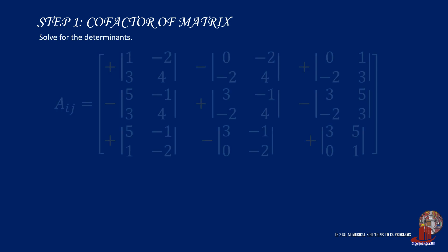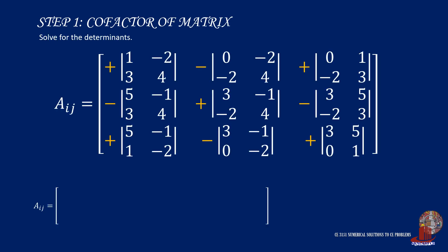Knowing all minors for the cofactor matrix, the next step is to compute for the determinants. From element A11, we have 1 times 4, which is 4, minus 3 times negative 2, as negative 6. Going down, we have 5 times 4, as 20, minus 3 times negative 1, as negative 3. Then further below, we have 5 by negative 2, minus 1, resulting to negative 1.